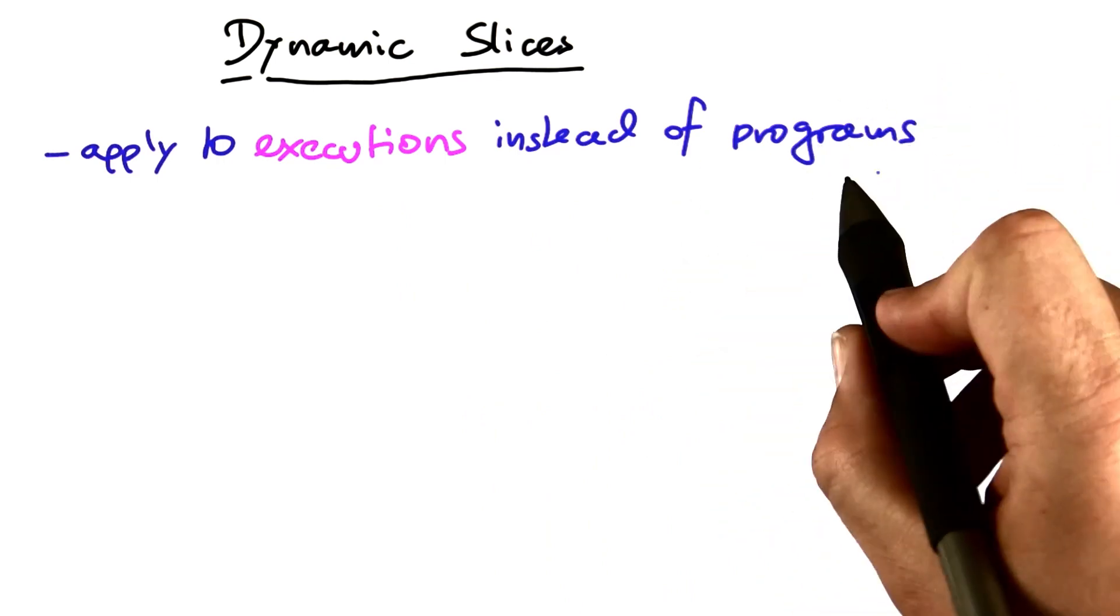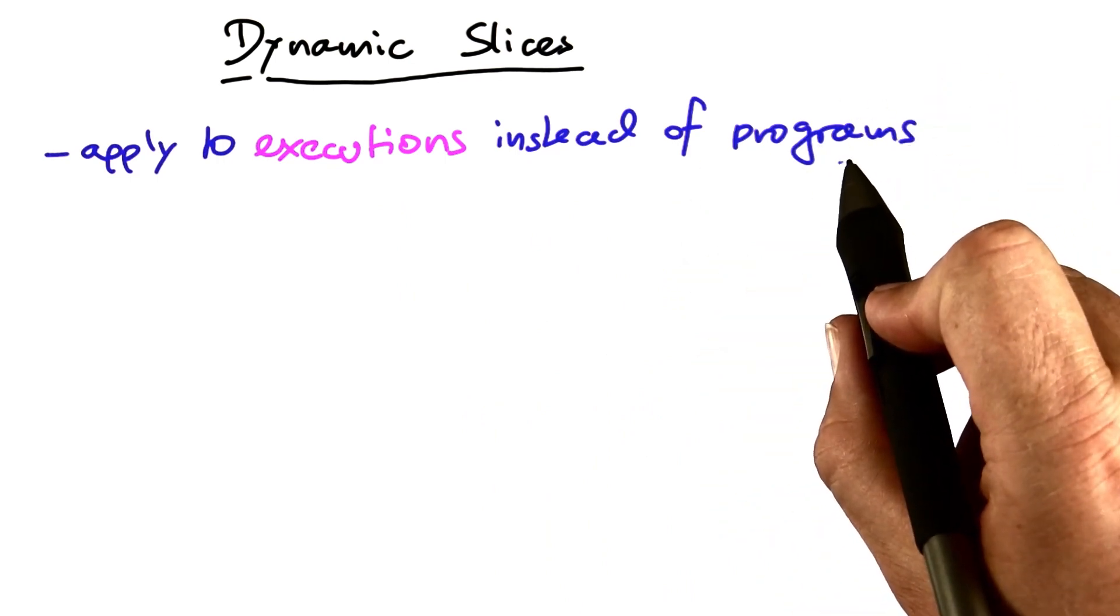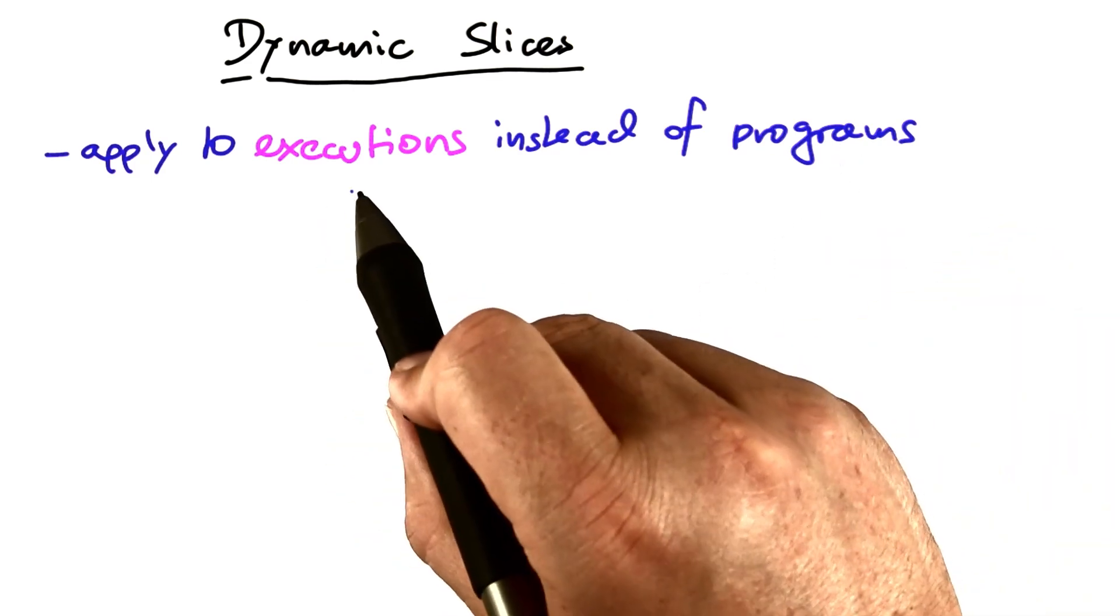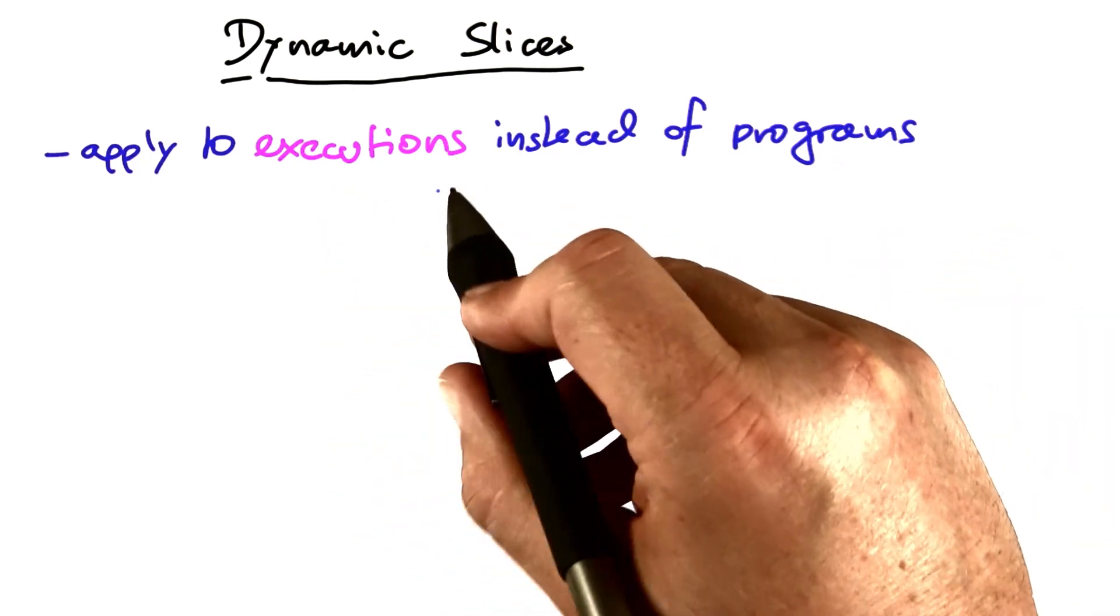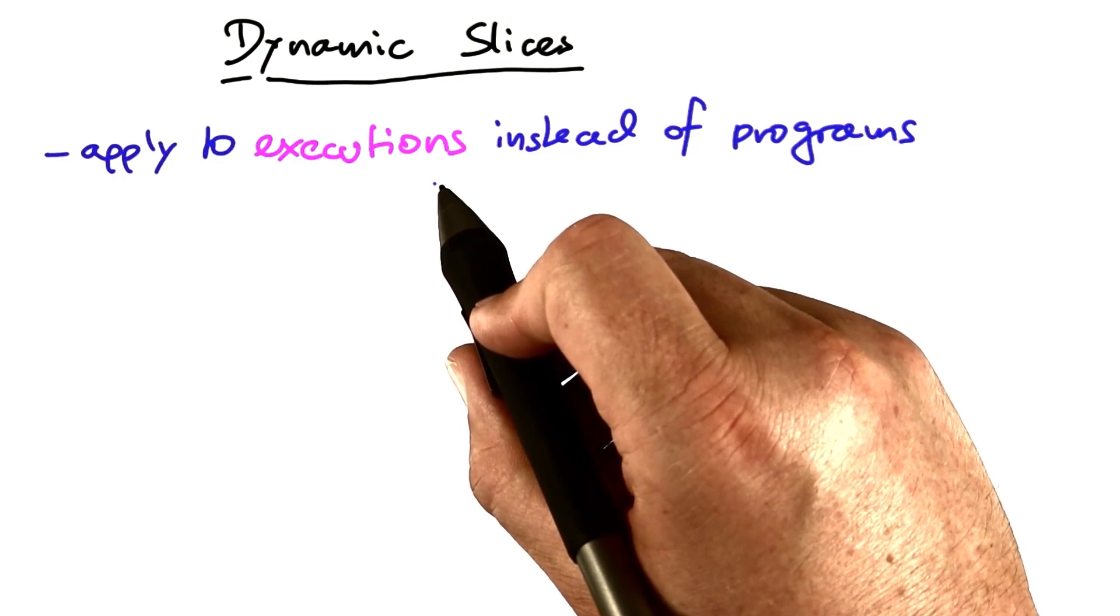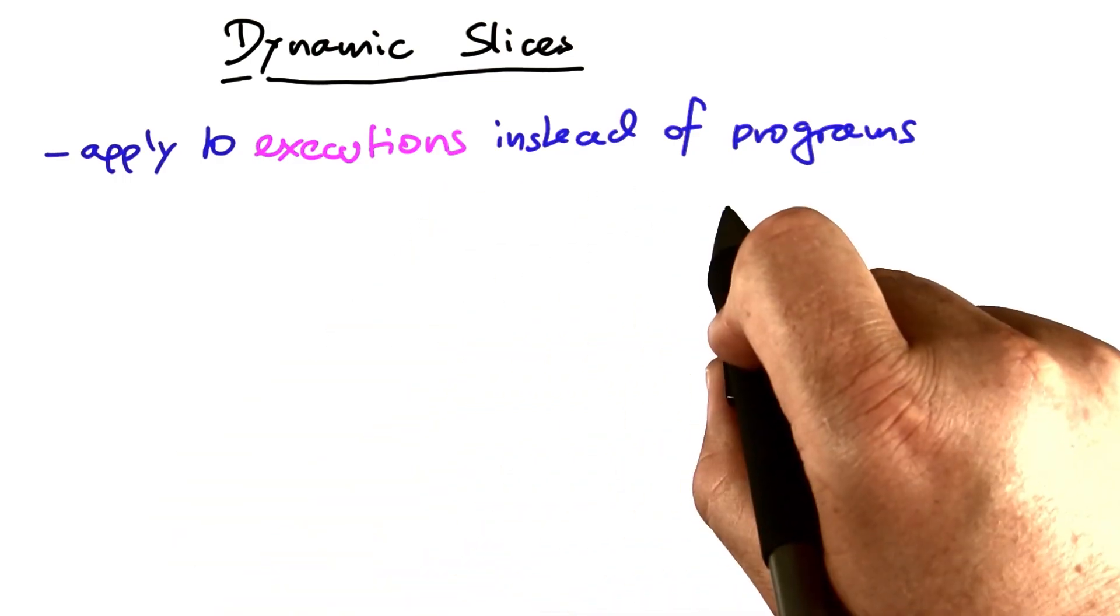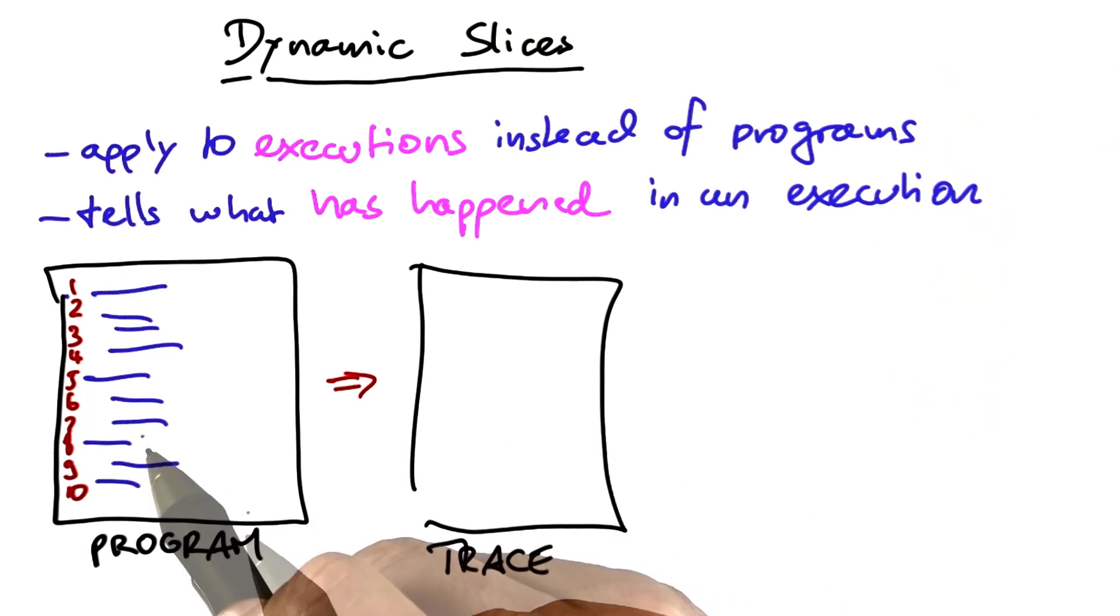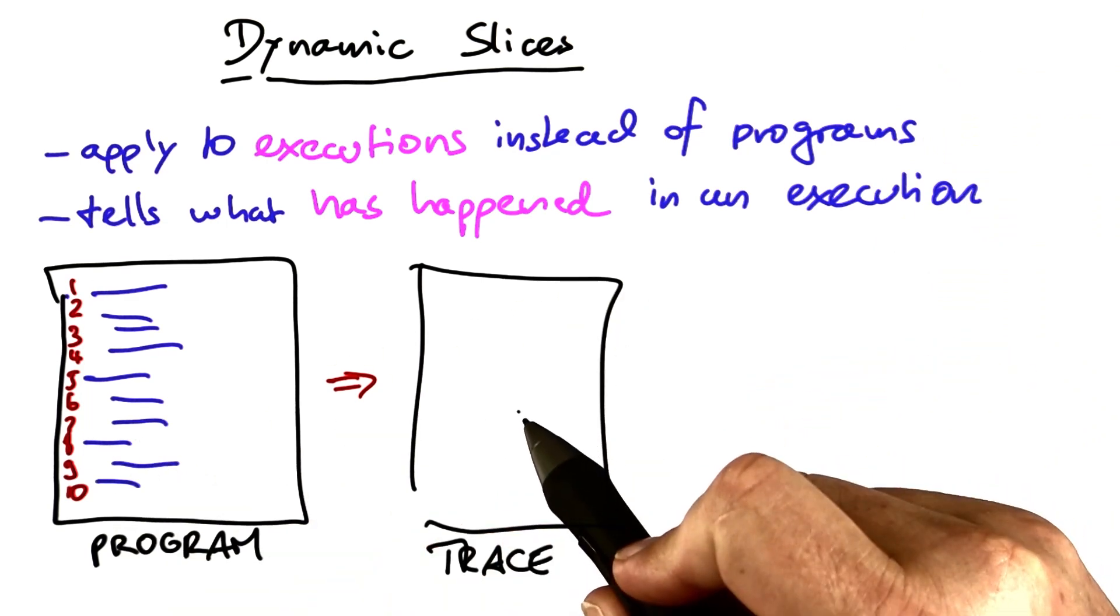That is, rather than reasoning in a program where a value came from, you look at the actual execution, typically the failing execution, and therefore not only know what could have happened but actually see what has happened. The base of our dynamic slice is not the program but a trace instead.